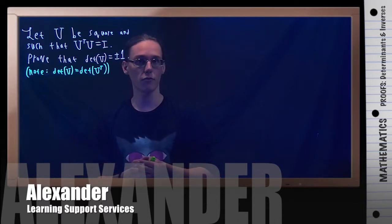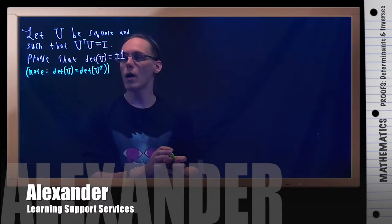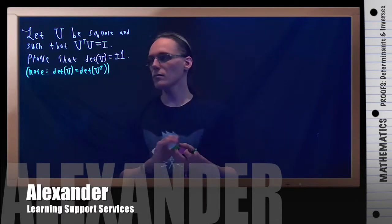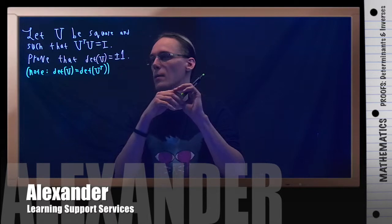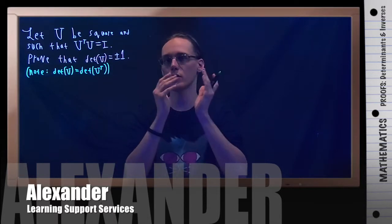I'm going to use that in this proof. First, I want to show the determinant of U is plus or minus 1. I know that U transpose U equals I, so I'll start with this identity.